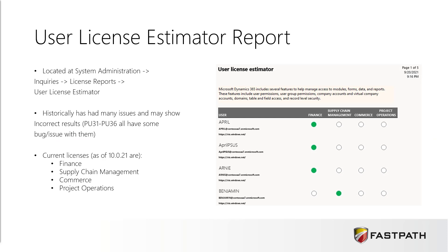The other report we have in the system is the user license estimator report. You can find this in sysadmin, inquiries, license reports, and user license estimator. Historically, this has had some issues between PU31 and PU36, so if you're coming from an older version you want to keep those in mind. Basically, this would show you for a particular user what license is going to be required. The current licenses as of 10.0.21 are finance, supply chain management, commerce, and project operations — obviously those may change in future versions as well.